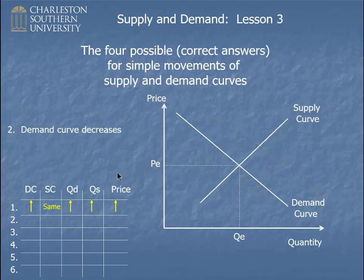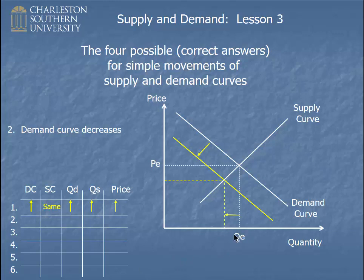For a demand curve decrease, the demand curve just shifts back to the left. You establish a new equilibrium here, and all you do is describe what's going on. The demand curve has decreased, the supply curve has stayed the same, quantity demanded has decreased because it moved from this equilibrium back to the previous one, quantity supplied did the same thing, and the price fell. Filling in the chart, it would look just like that.